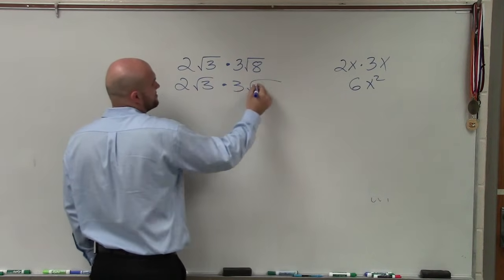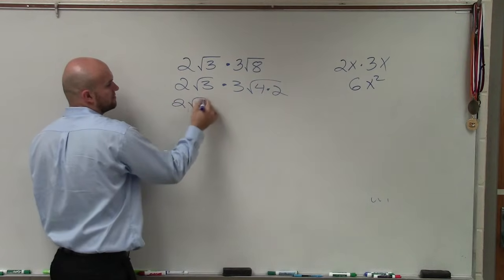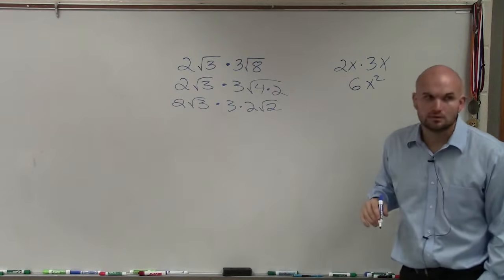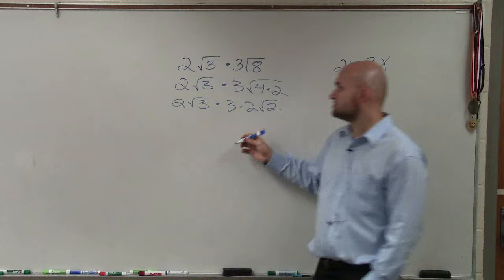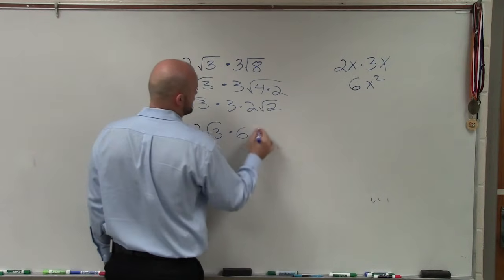2 times square root of 3, times—this can be the square root of 4 times 2. Do we know what the square root of 4 is? 2. Then 2 times 3 is 6. So I have 2 square root of 3 times 6 square root of 2.